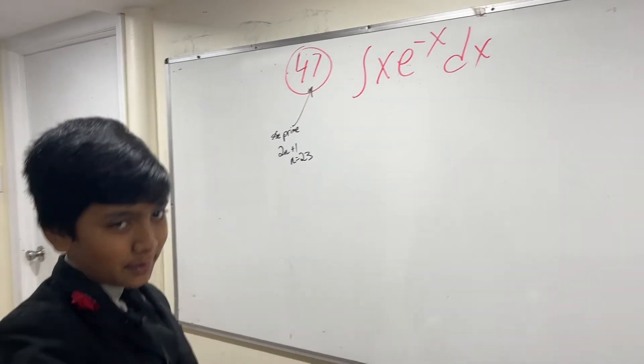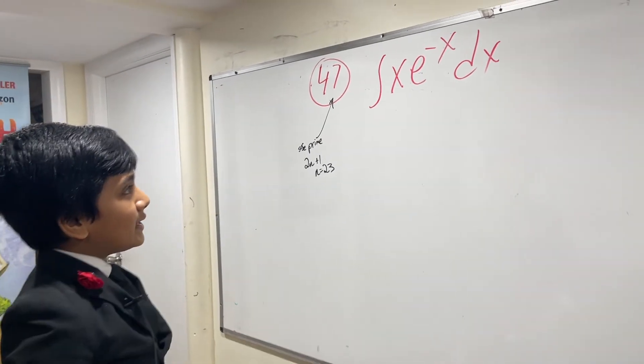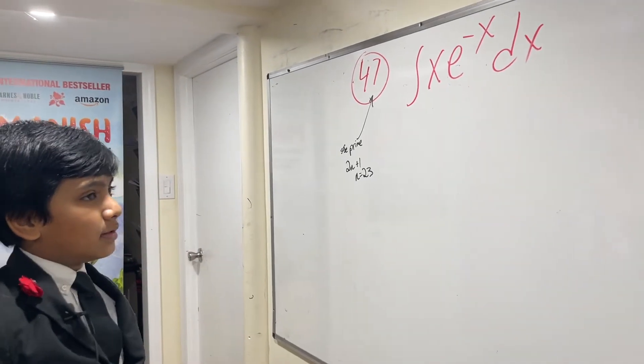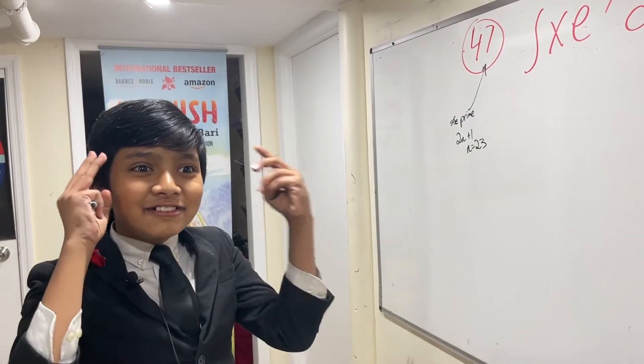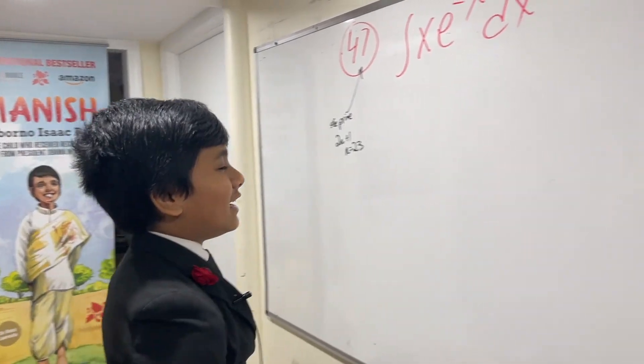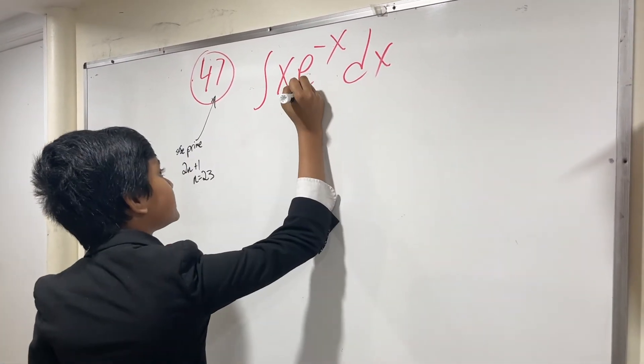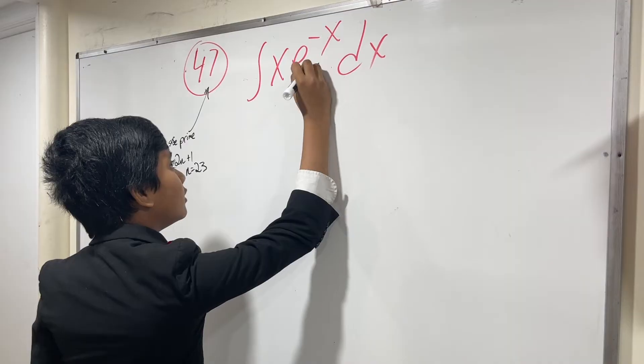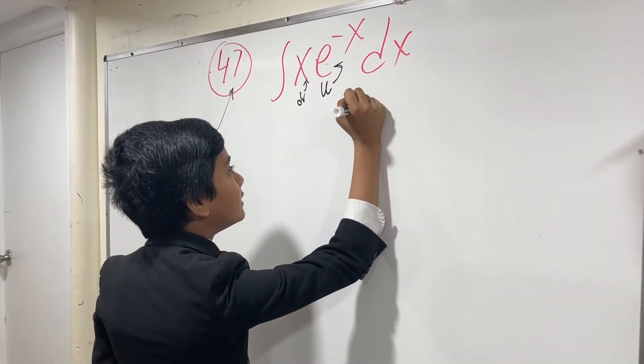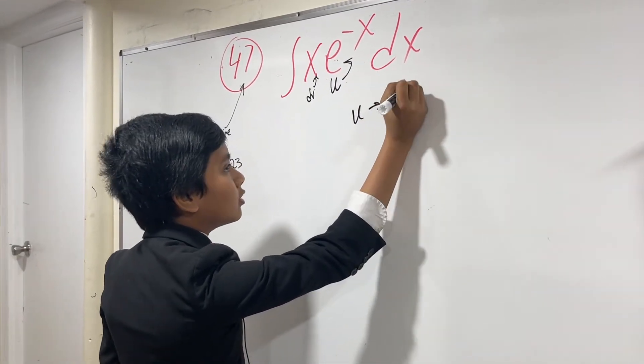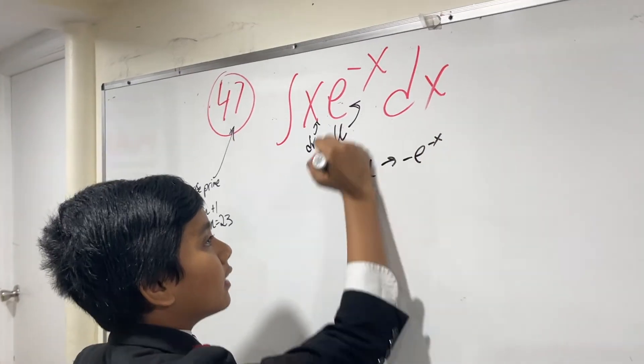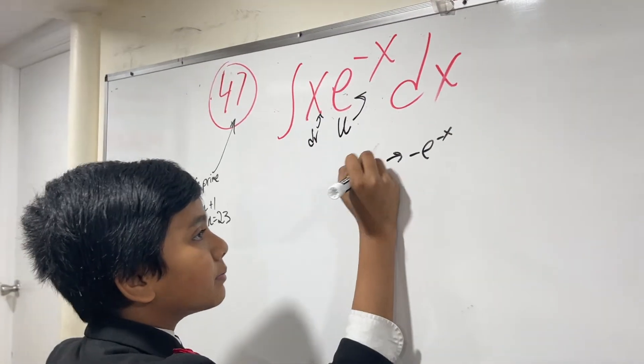Okay, the integral of x*e^(-x). This is integration by parts, so let's do this. Let this be u, and now we have to find dv and du.